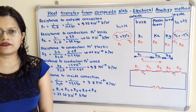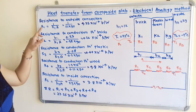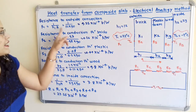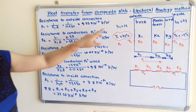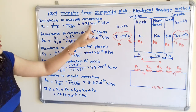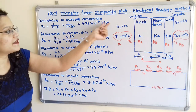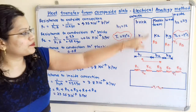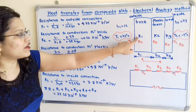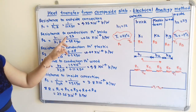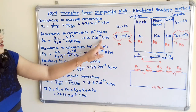Now for the calculations. R1 (outside convection) = 1/(H1·A) = 1/(12 × 90) = 9.25 × 10⁻⁴ K/W. R2 (conduction through brick) = B1/(K1·A) = 0.23/(0.98 × 90) = 0.26 × 10⁻⁴ K/W.